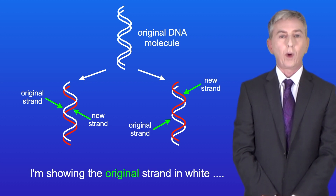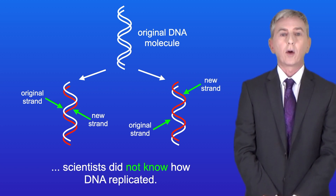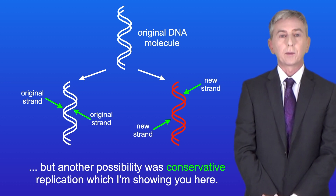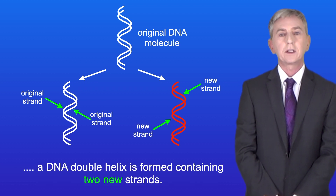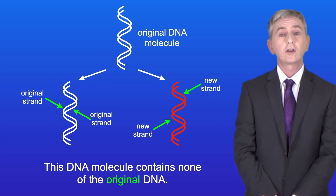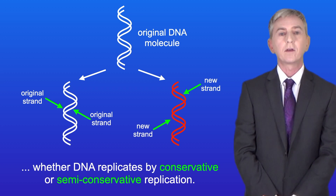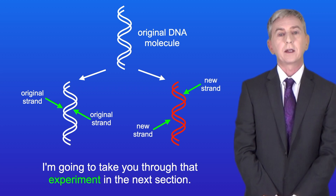I'm showing the original strand in white and the new strand in red. When the structure of DNA was first discovered in the 1950s, scientists did not know how DNA replicated. Semi-conservative replication was one possibility, but another possibility was conservative replication. In conservative replication, a DNA double helix is formed containing two new strands, and that DNA molecule contains none of the original DNA. Scientists had to design an experiment to show which mechanism was correct.